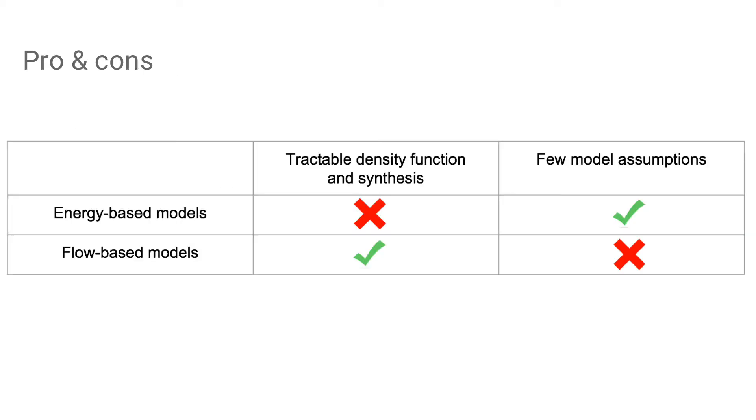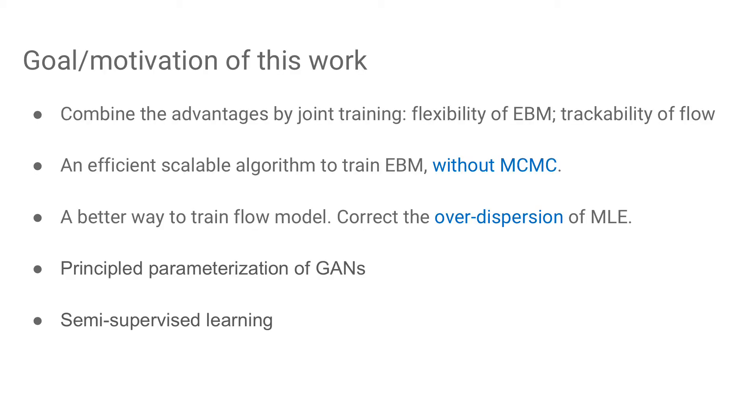Comparing the two types of models, the flow model is capable of density evaluation and direct synthesis, which is sorely lacking in an EBM. On the other hand, EBM has few model assumptions, which is more flexible in form than the flow model, which is highly constrained by invertible functions. And thus, EBM may capture the modes of data more accurately than flow. It is desirable to combine the advantages of the two models. That is, the flexibility of EBM and tractability of flow. This is the goal of the work.